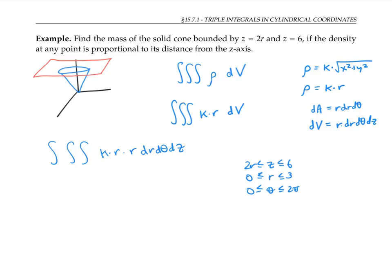If I write these down in this order, r on the inside, then theta, and then z, I run into a problem. My bounds for z still include other variables, namely the variable r. So I won't actually get a number or even an expression with k in it out of this integral.